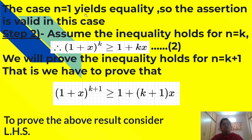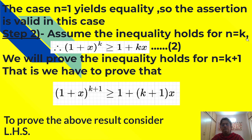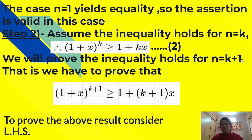The case n equal to 1 yields equality, so the assertion is valid in this case. Step 2: assume the inequality holds for n equal to k, meaning (1 plus x) raised to k is greater than or equal to 1 plus kx. We must prove it holds for n equal to k plus 1, that is: (1 plus x) raised to (k plus 1) is greater than or equal to 1 plus (k plus 1)x.